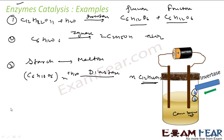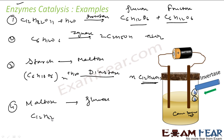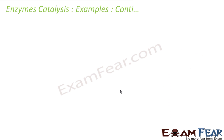One more example: maltose converted into glucose. If you want to convert maltose into glucose, you use the enzyme called maltase. Maltose to glucose using maltase.